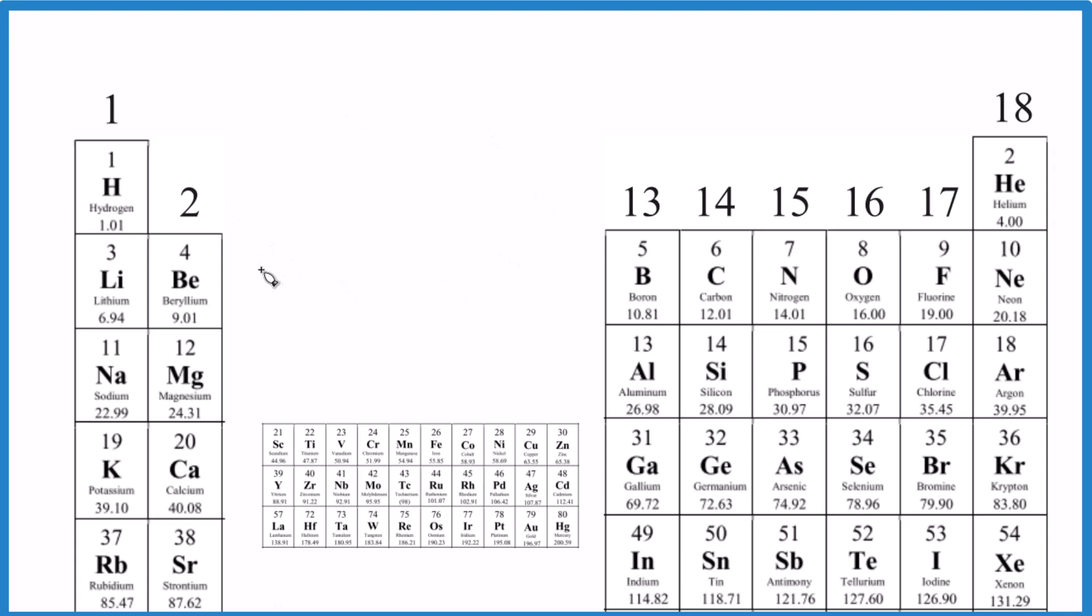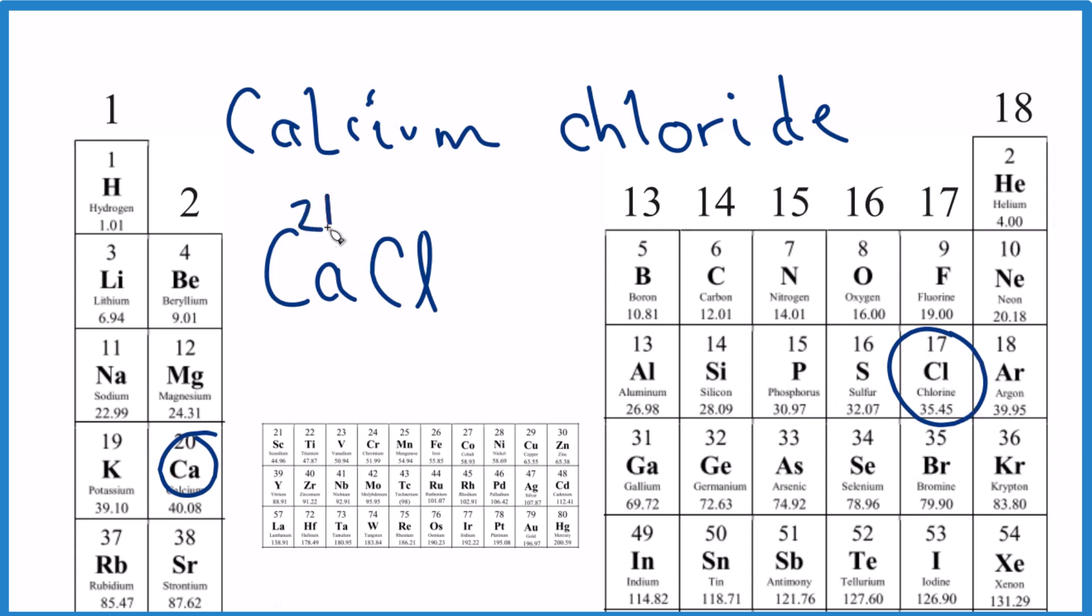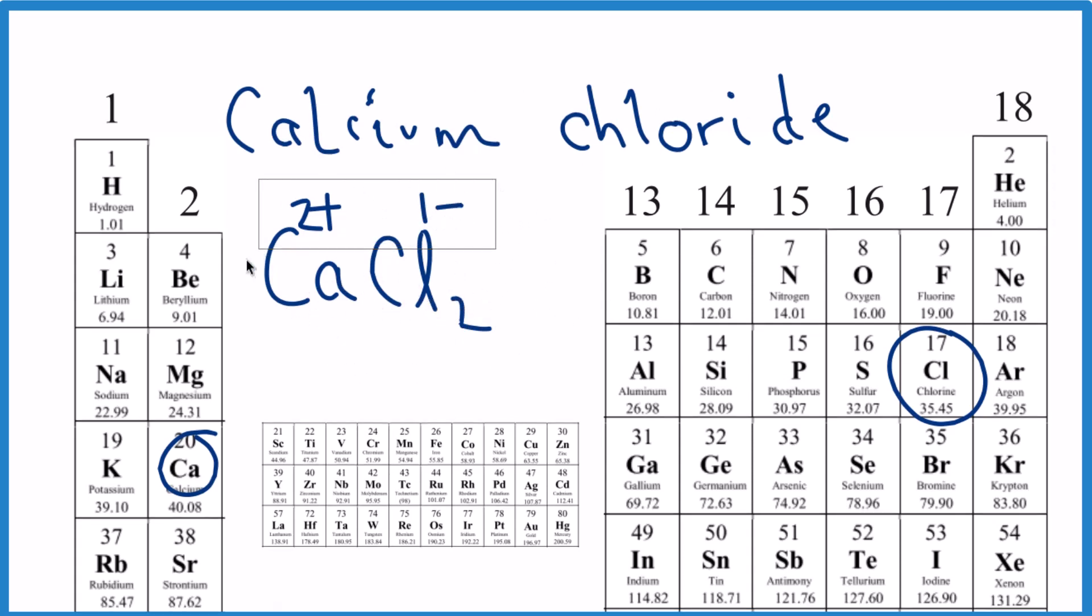Let's use that to write formulas for some ionic compounds. If you're given something like calcium chloride, you find calcium and chlorine. We'll write Ca and then Cl for chlorine. But because we have a metal and a non-metal, we need to think about ionic charge. Calcium is two plus, chlorine is one minus. So we need two of these to write the formula for calcium chloride, which is CaCl₂.